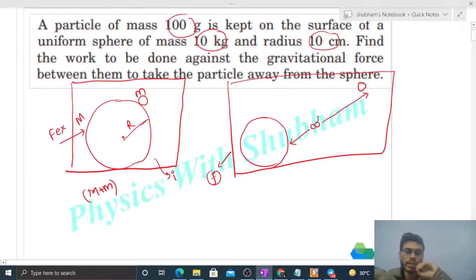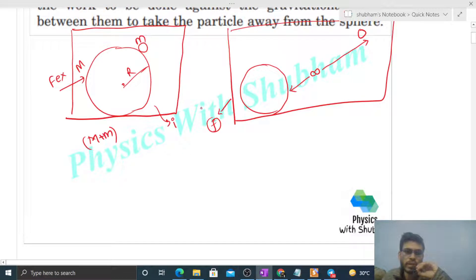Now how many forces will act on this system during this process? There will be one external force. There will be one internal force also, that will be gravitational force of attraction between this capital M and small m. So let's write it Fg, that is the gravitational force of attraction between capital M and small m.